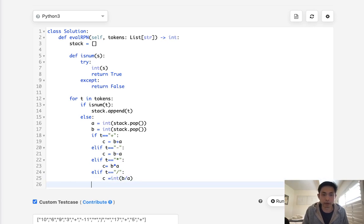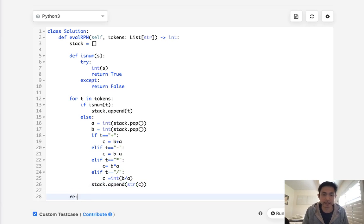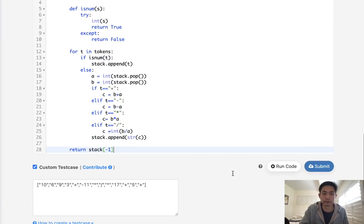And finally, we'll add it back to our stack, string version of our candidate. Now at the very end, we should just have one number inside of our stack. So we need to return, well, it doesn't matter if we do 0 or negative 1, but just in case, we'll do negative 1 here. And let's see if this works.